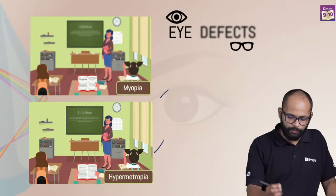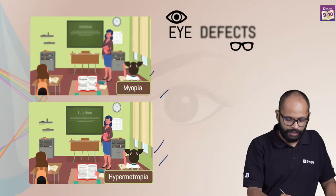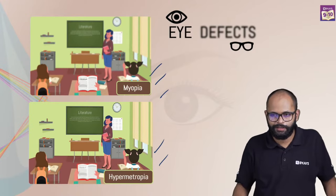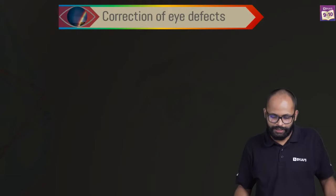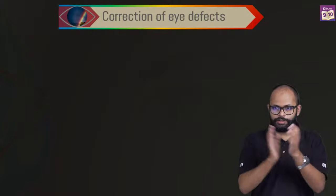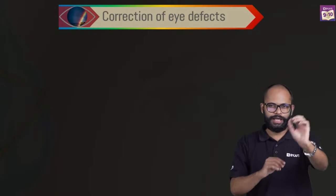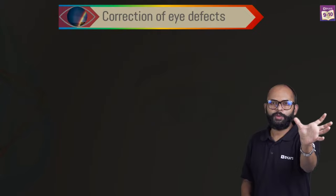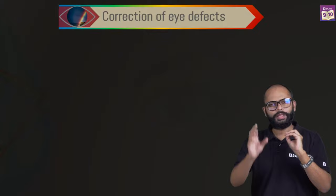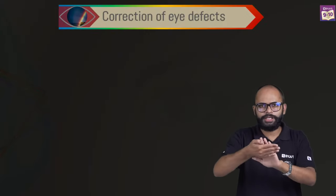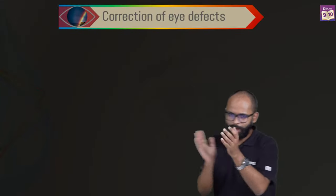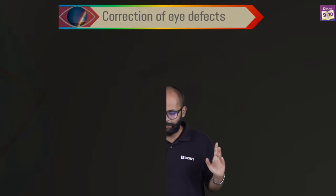We've learned about both myopia and hypermetropia. Quick recap: hypermetropia — long word, long sightedness — far object fine, near object is a problem. Myopia — short word, short sightedness — near object is fine, far is a problem.